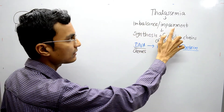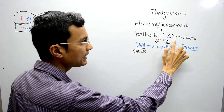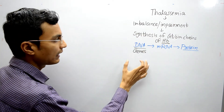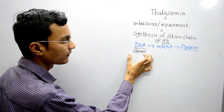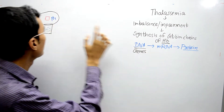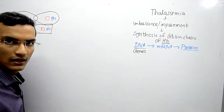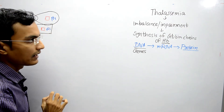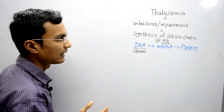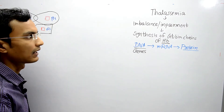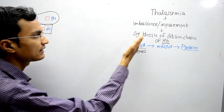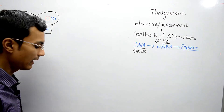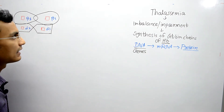There will be imbalance or impairment in the synthesis of globin chains and then thalassemia disorder occurs. So if there is any defect in the genes that code for beta chains, then there will be beta thalassemia — an imbalance in the synthesis of beta globin chains of hemoglobin.